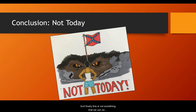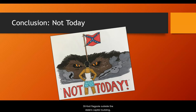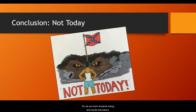This is not something we can do overnight. However, we can look for instances where we can stand up and say "not today." This image illustrates something from Rachel Held Evans' book Inspired, where she writes: "On a muggy June morning in South Carolina, a young Black woman named Bree Newsome scaled the 30-foot flagpole outside the state's Capitol building, looked straight into the eyes of the beast, and said, 'not today.'" So as we work towards being anti-racist educators, we can look for instances — which may seem small and insignificant at the time — where we can stand up and say: not today, not here, not now. Thank you for watching this video.